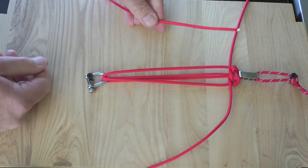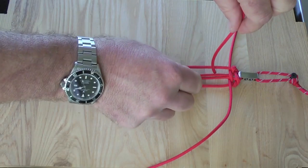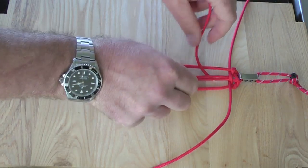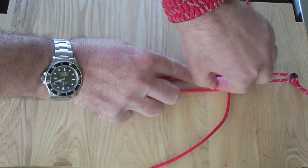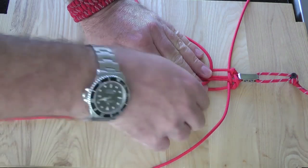I take the rope on the left. I'll pass it over, above the outside left, under the middle two, and then over the outside right. Pull that through.